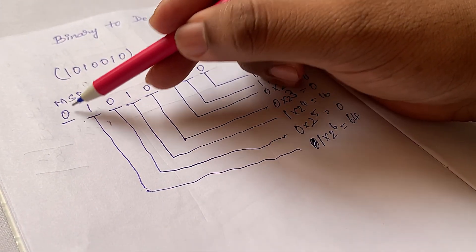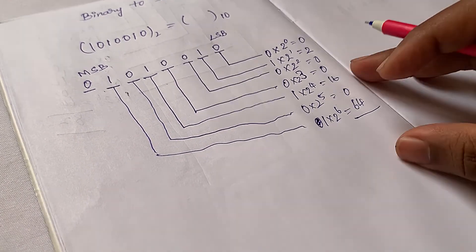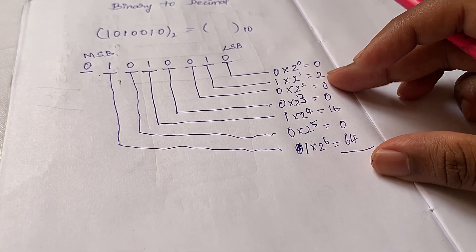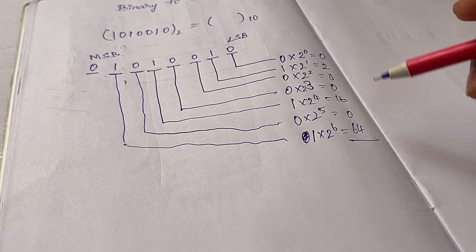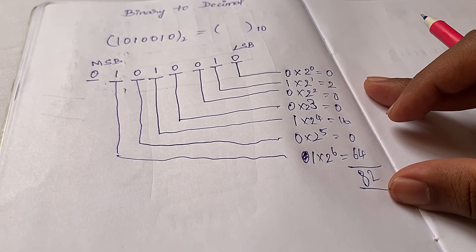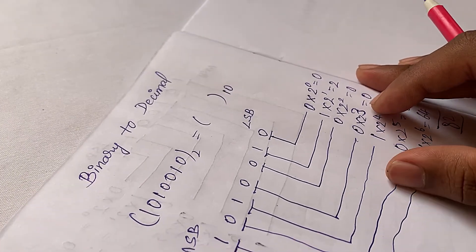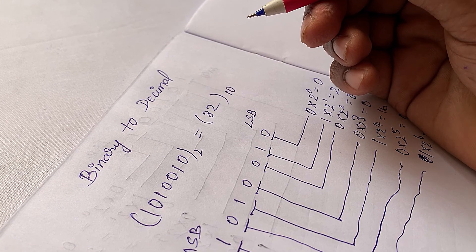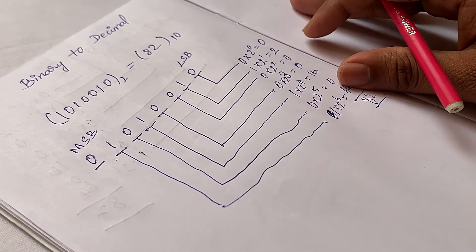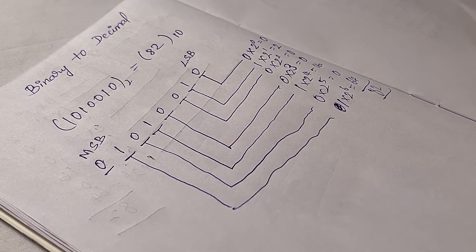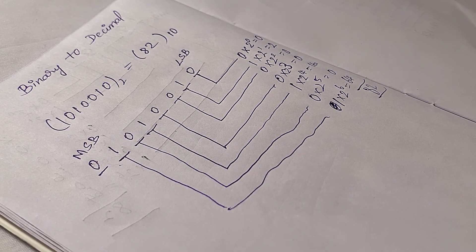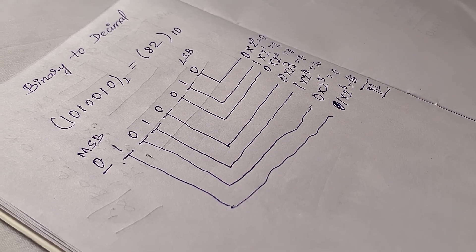Adding all the results: 2 + 16 + 64 = 82 in decimal. This is how you convert a binary number into decimal format — multiply each bit by 2 to the power of its position, then sum all the results. I hope you learned how to convert binary data into decimal and decimal into binary. See you in the next video — thanks for watching.